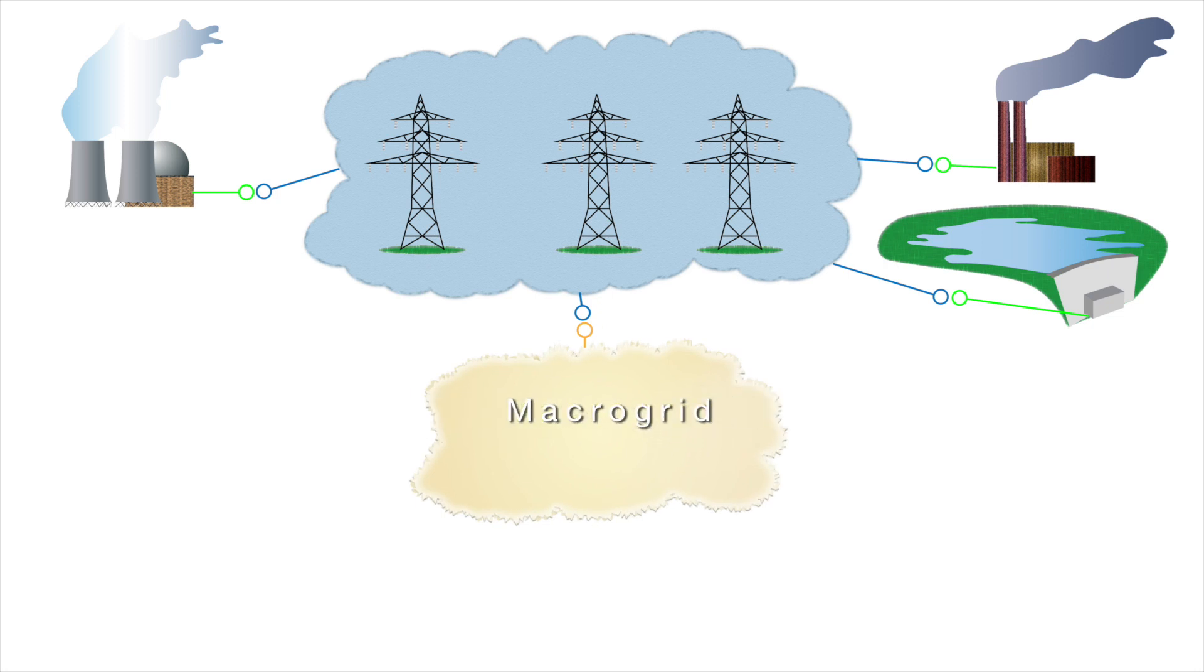The second component of the macrogrid is distribution to the high voltage section which is nearer to the connected load but still distant enough to require higher voltages to reduce power losses.